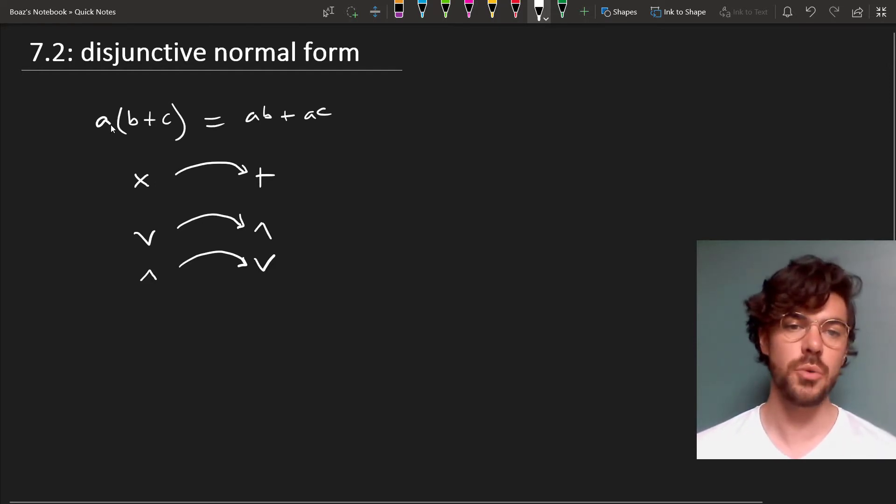Last time we saw how we went through a few iterations to get a sentence in disjunctive normal form into a sentence in conjunctive normal form. Now we're going to see how we can run it the opposite way.